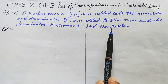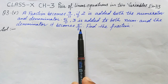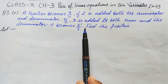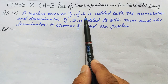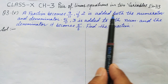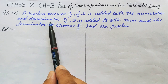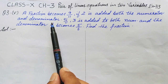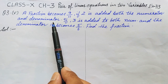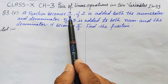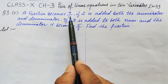We have one fraction. Suppose numerator is x and denominator is y, then the fraction becomes x over y. The first condition is: if 2 is added to both the numerator and denominator, it becomes 9 over 11. It means if I add 2 in the numerator it becomes x plus 2, and 2 in the denominator also, it becomes y plus 2. So the fraction will be (x+2) over (y+2), which is equal to 9 over 11 according to the question. This will be our first linear equation.